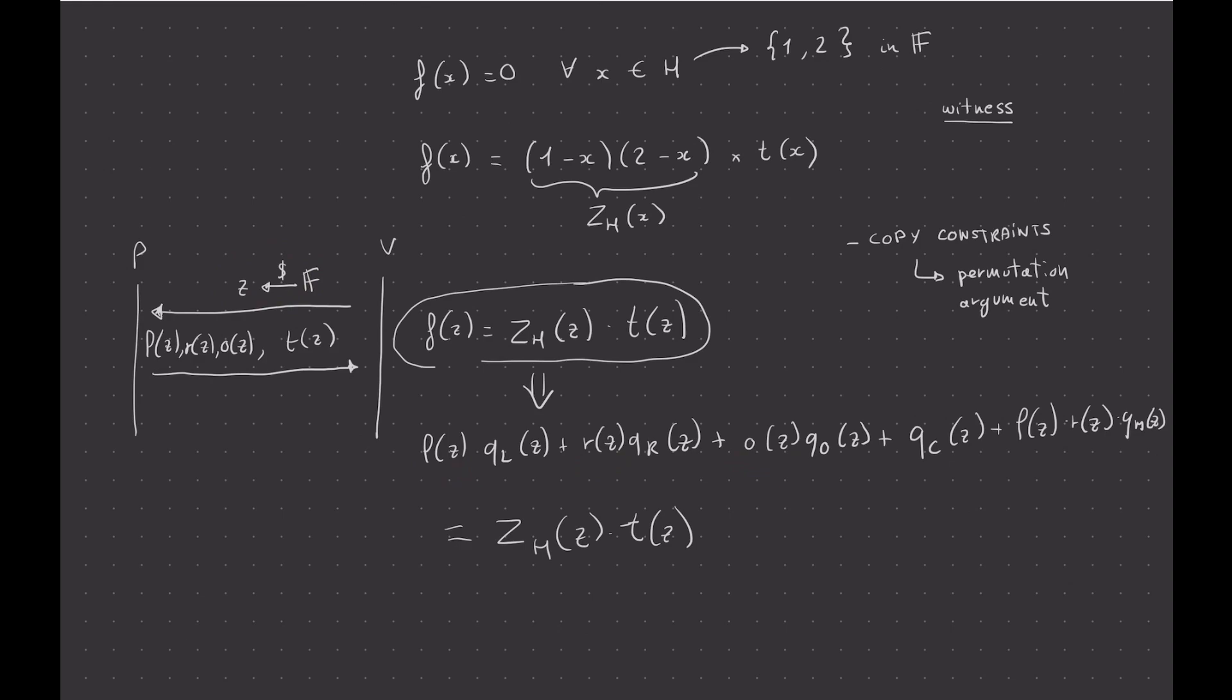So what's really important here at this point in the protocol, what's really important is that I cannot form, as the prover, I cannot form these polynomials after I know what z is. And if I can do that, there are like some attacks that I can perform on the soundness of the protocol, which means I can lie and find something that actually doesn't—it's not a correct execution of the circuit.